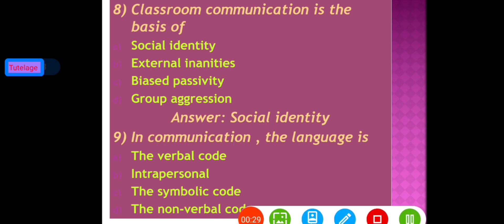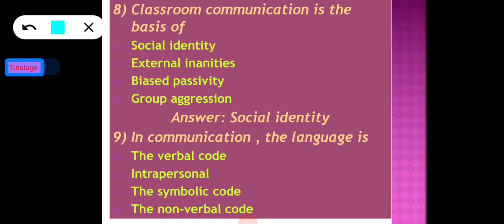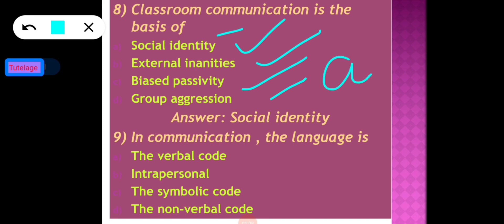The next question: classroom communication is the basis of — social identity, external inanities, biased passivity, or group aggression. Communication has a social context, so classroom communication is the basis of social identity. Option A — social identity — is the correct answer.